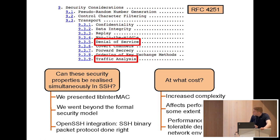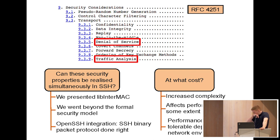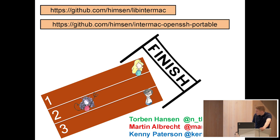To conclude: the answer to the first question is yes — we implemented InterMAC. We also tried to identify issues that go beyond the formal security model, and we think that our InterMAC-based encryption schemes in OpenSSH better capture the desired security that SSH wants to provide compared to existing ones. Using InterMAC adds some cost: increased complexity in integration and implementation, which affects performance to some extent. Depending on your use case, this may or may not be tolerable. You can find our code on GitHub or contact us on Twitter.